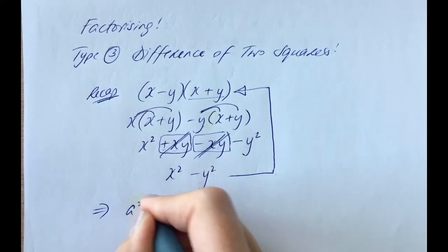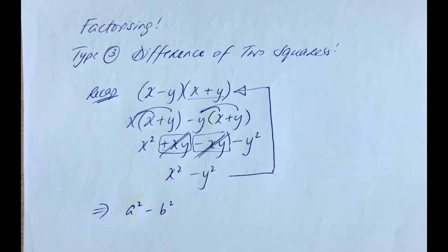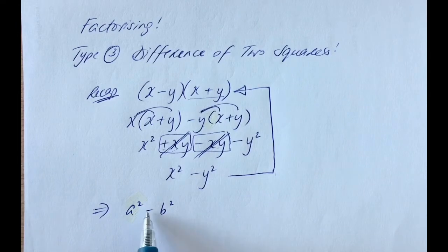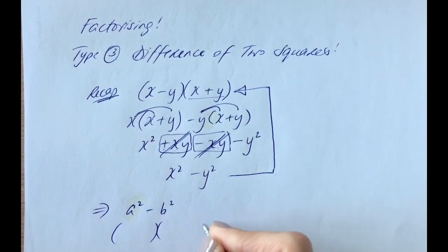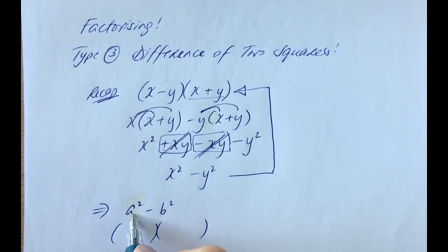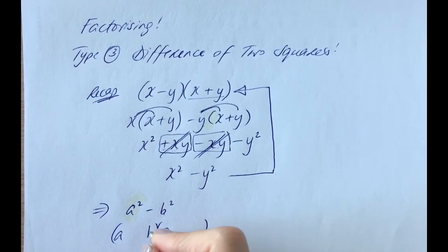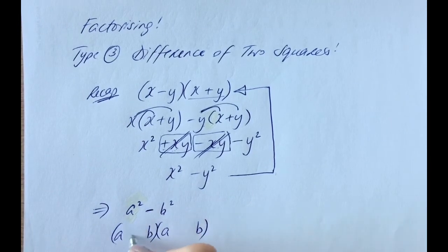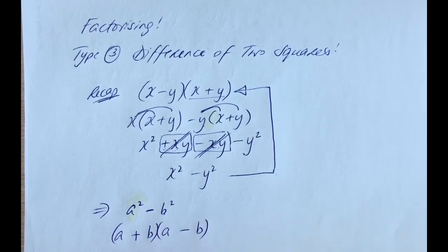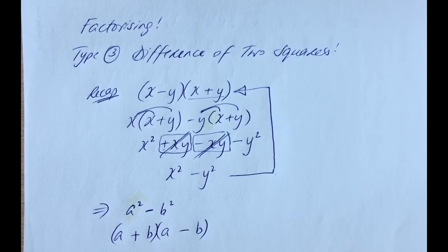Let's take the example a squared minus b squared and factorize it. Straight away, because I can spot it's a square subtract a square — the difference of two squares — I'll open my two brackets. The square root of a squared is a, and a times a gives a squared. The square root of b squared is b, because b times b gives b squared. Since there's no middle term, there must have been a plus in one bracket and a minus in the other. That's the final answer.